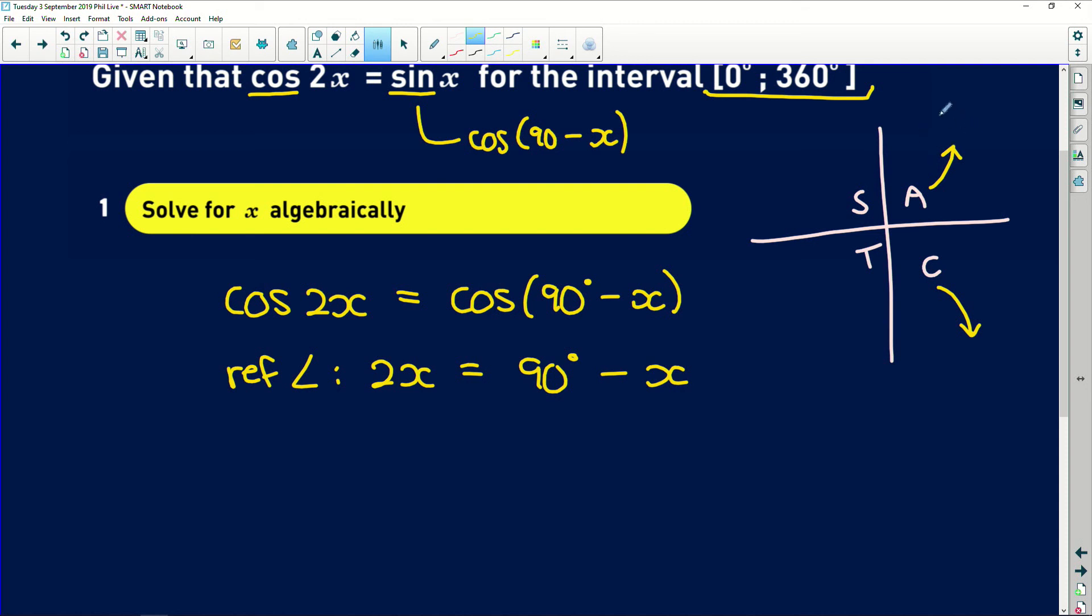So in the first quadrant we simply have the reference angle plus k of 360 degrees. Because remember the cos function repeats itself. That's where the k360 comes from. But in the fourth quadrant we need to take 360 degrees minus the angle plus k360. Very important. So remember if we had sine here you would work in the first and second quadrant. But we have cos. First and fourth quadrant. So we're going to have two different solutions.